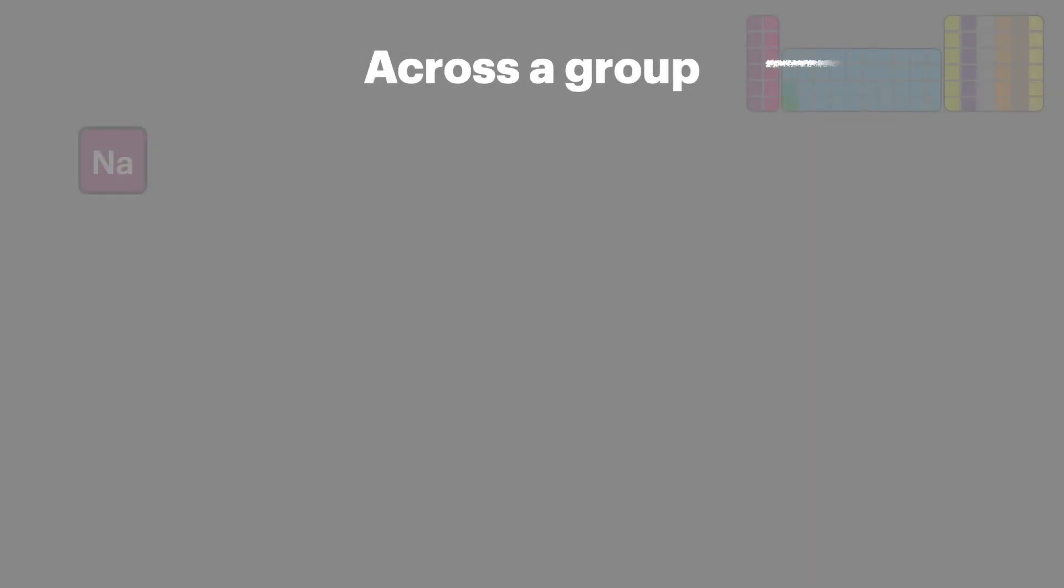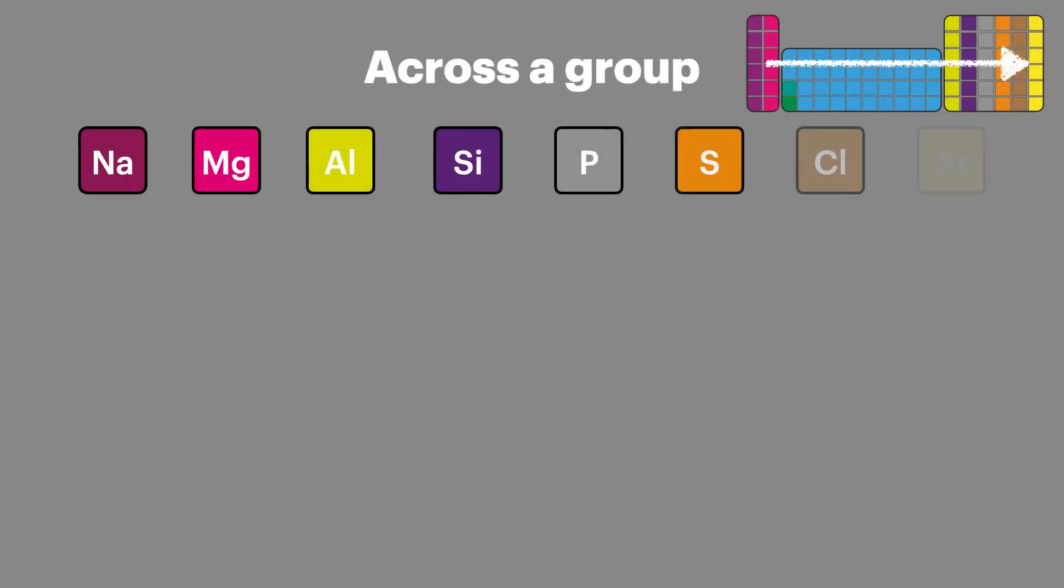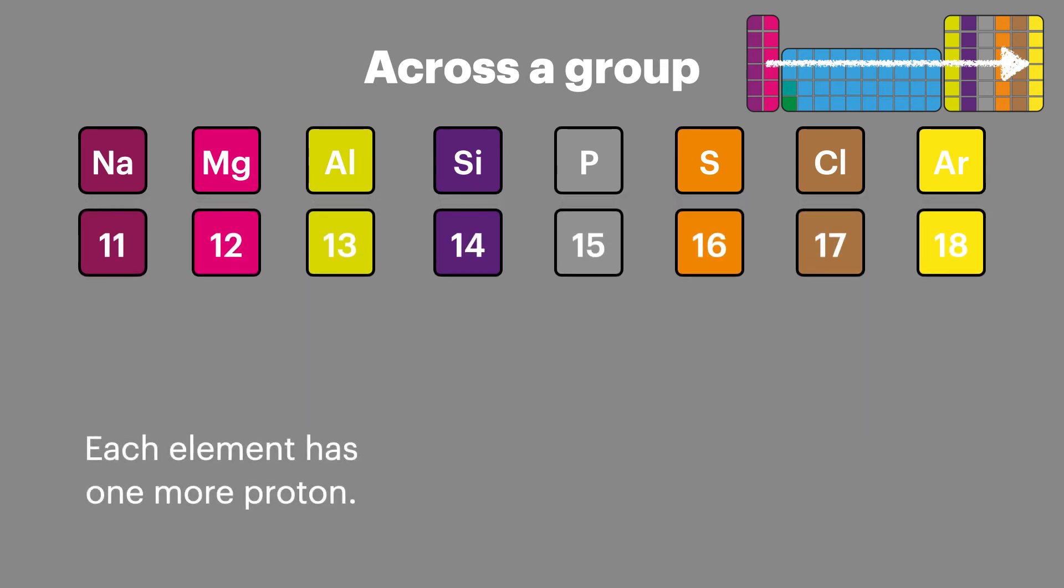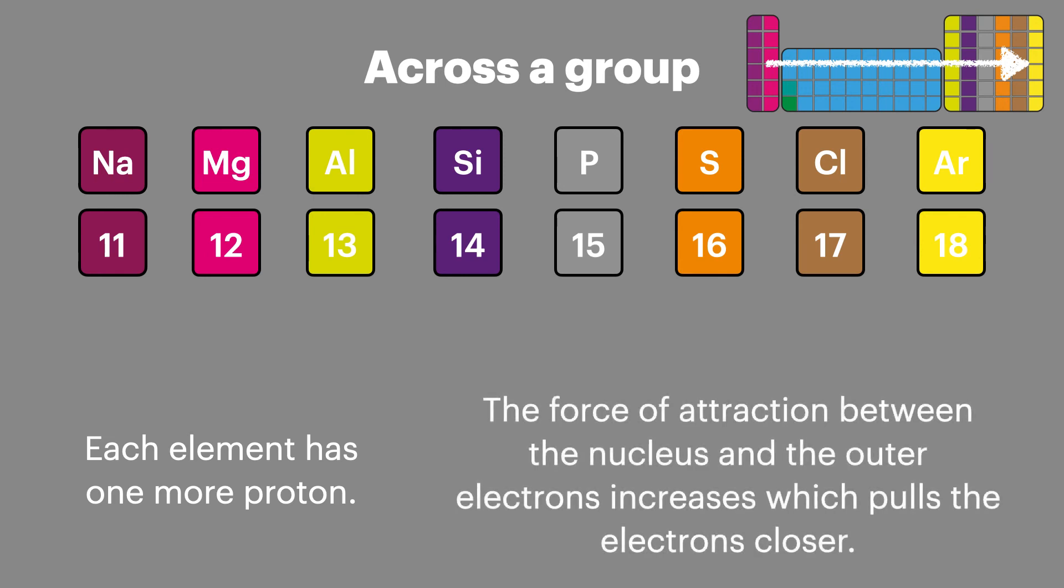As we go across the group and here we'll look at period three elements as they are of particular interest to our AQA level specification, we can see that each element has an extra proton than the one before. This extra proton increases the force of attraction between the nucleus and those outer electrons, which pulls them closer, reducing their atomic radius.